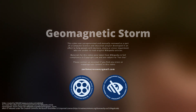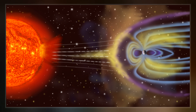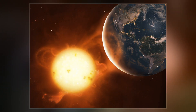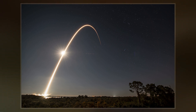A geomagnetic storm, also known as a magnetic storm, is a temporary disturbance of the Earth's magnetosphere caused by a solar wind shock wave and/or cloud of magnetic field that interacts with the Earth's magnetic field. The disturbance that drives the magnetic storm may be a solar coronal mass ejection or a co-rotating interaction region, a high-speed stream of solar wind originating from a coronal hole.